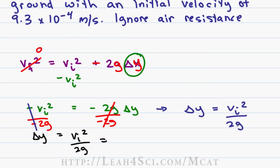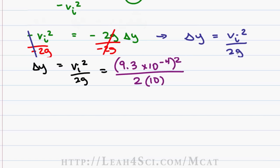Now let's plug in the numbers. v initial is 9.3 times 10 to the minus 4 so we have 9.3 times 10 to the minus 4 squared. Divide that by 2 times g. The gravitational acceleration is 9.8 meters per second squared but on the MCAT you're fine using 10. We'll skip the units for the sake of focusing just on the math.